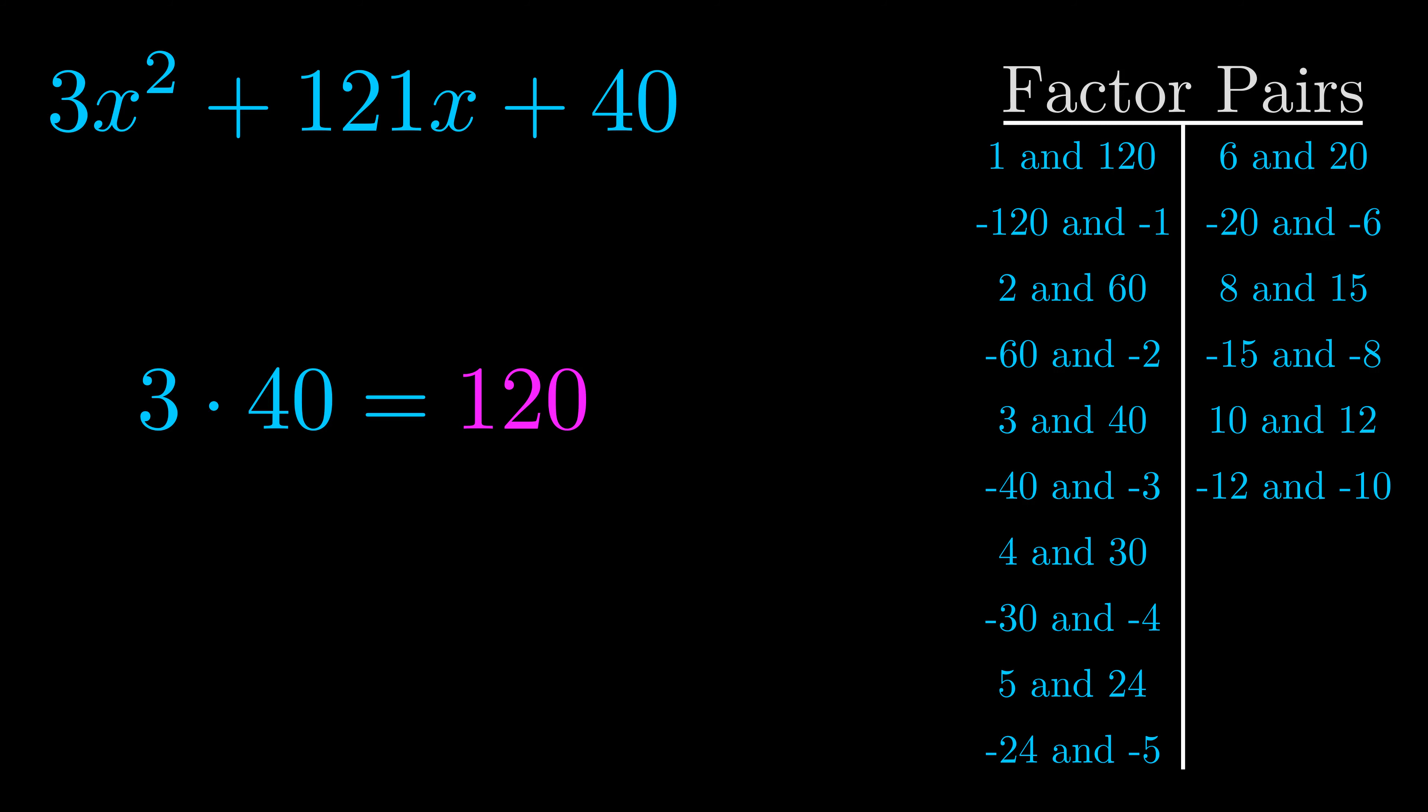Now once you have these factor pairs, the goal is to find which of these pairs adds to the b value.